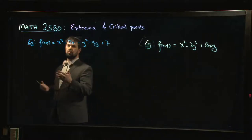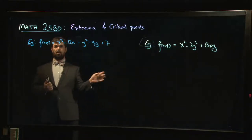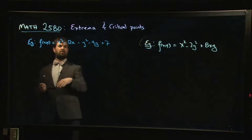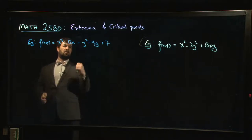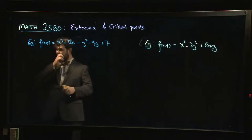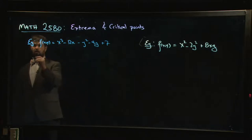So here's a function, a polynomial function. Both of these are polynomials, so x³ - 12x - y² - 4y + 7. And we want to find all critical points. So we want to find the critical points.